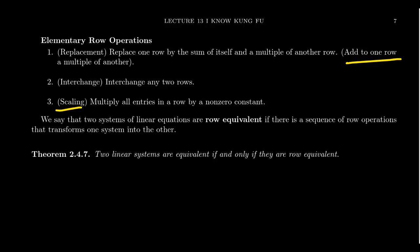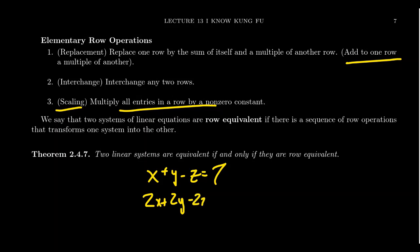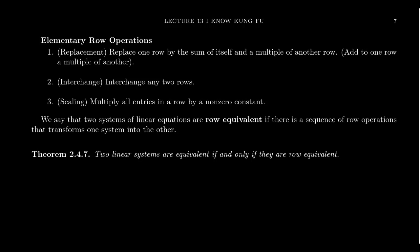The scaling operation means you can multiply any row by a non-zero scalar, and that doesn't change the solution set. For example, if you have x + y - z = 7, and you multiply both sides by 2, you get 2x + 2y - 2z = 14 — that didn't change the solution. Likewise, the interchange operation means I can switch the order of any two rows, so that the second becomes first and the first becomes second. The order in which rows are listed shouldn't affect the solution set.